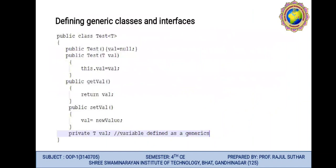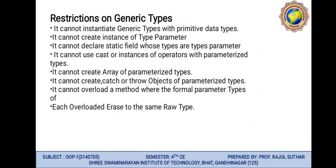Restrictions on generics: A generic class object cannot be created with primitive data types — that is a restriction, or we can say a disadvantage. Type parameters cannot be instantiated. Cast and instanceof cannot be used with parameter types. Cannot create an array of a parameter type. Cannot catch or use a parameter type in a catch clause. Each overloaded method erases to the same raw type. These are the restrictions on generics.